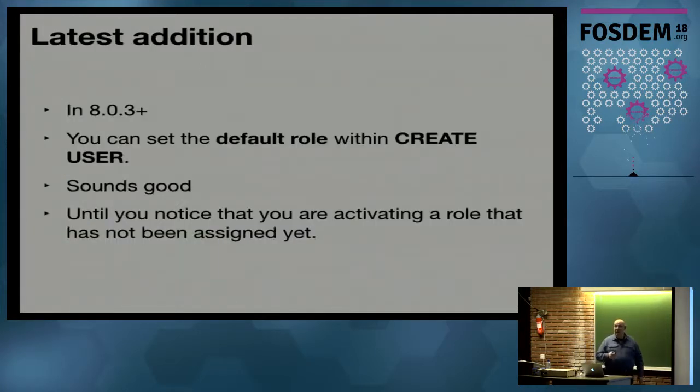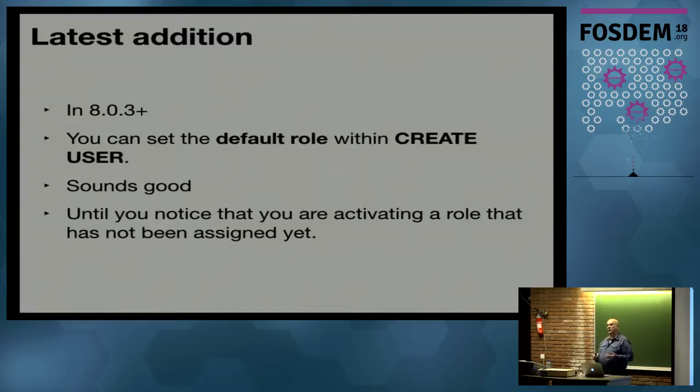One strange consequence of mandatory roles is that if a user already has the privileges provided by the mandatory role, the mandatory role comes to them anyway. For example, the user root also gets the grants for the Lord of the Rings database even though root can already access everything.